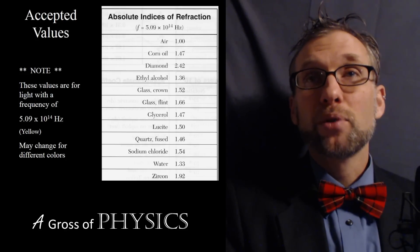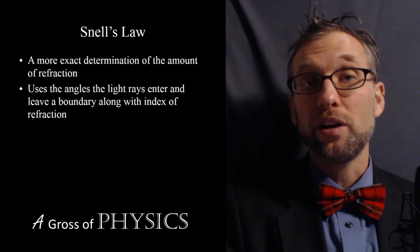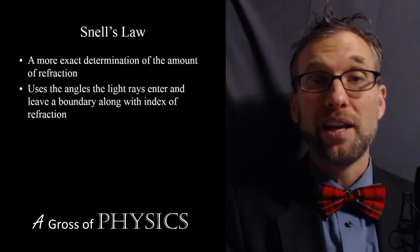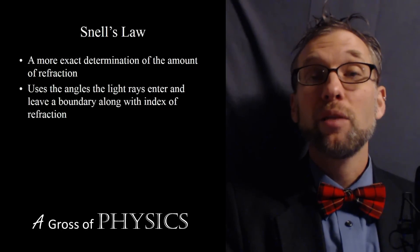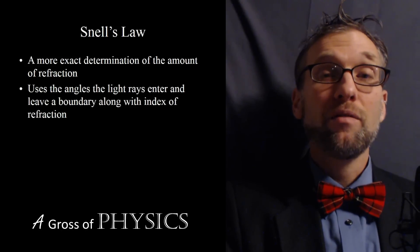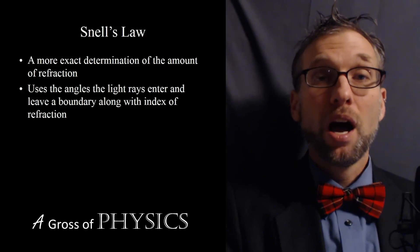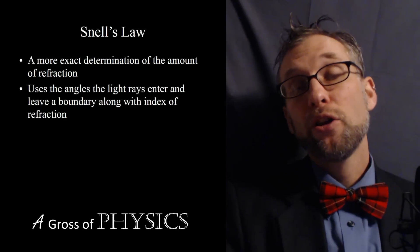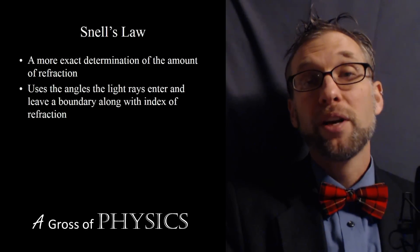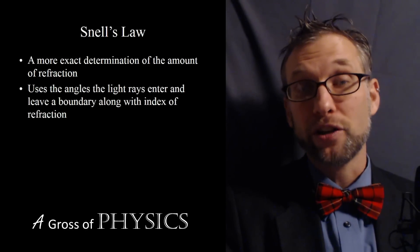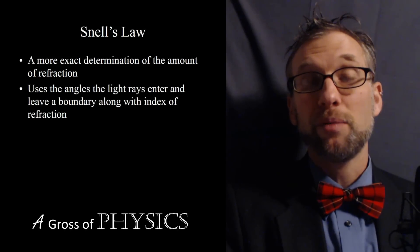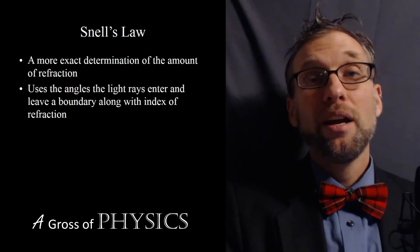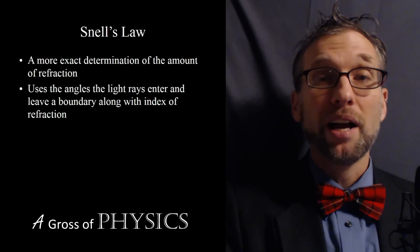To get a very precise value for how much light turns when it goes into a new material, we have what we call Snell's Law. Snell's Law is a geometric relationship between the angles of incidence and refraction compared to the indices of refraction. Willebrord Snell came up with this relationship. We always measure the angle of incidence and refraction — theta — usually theta 1 and theta 2, because we don't want to confuse theta r with reflection.